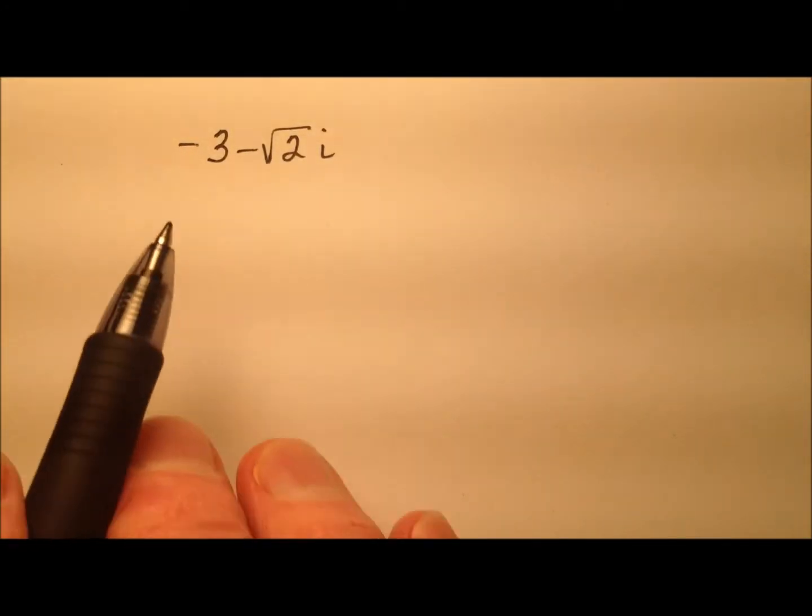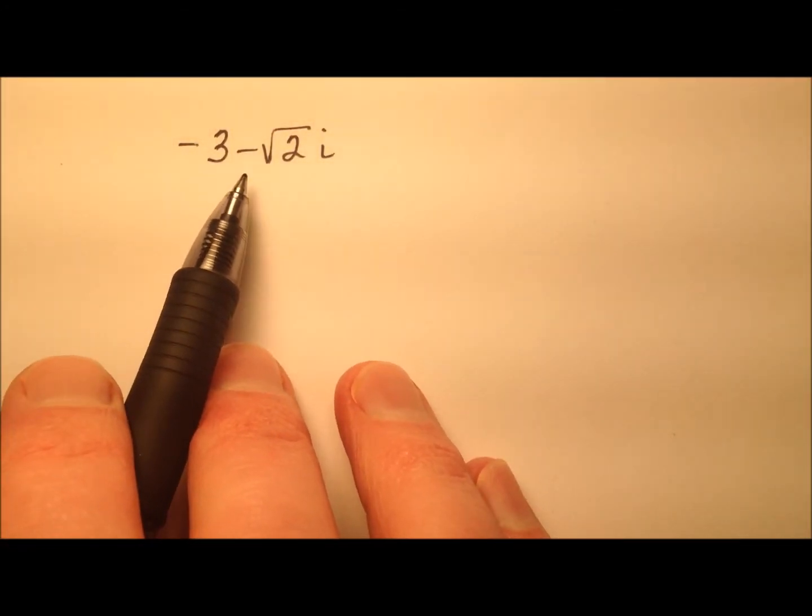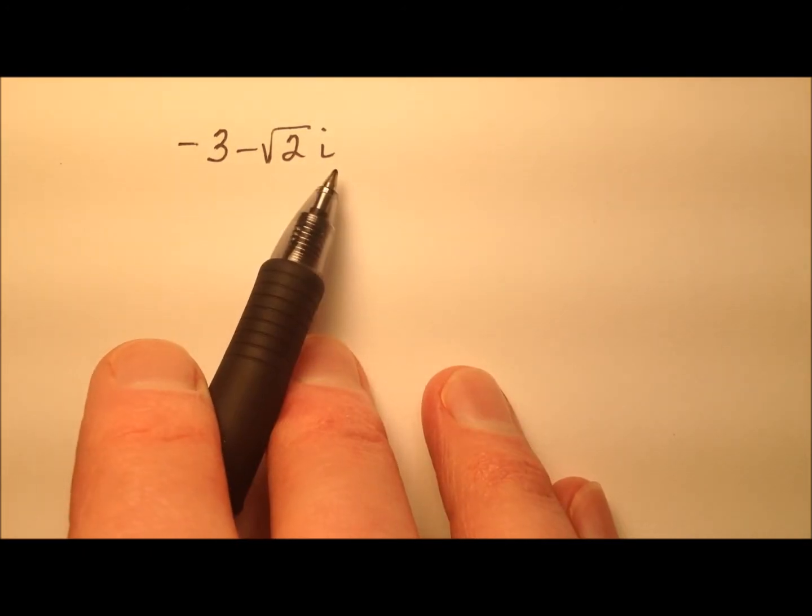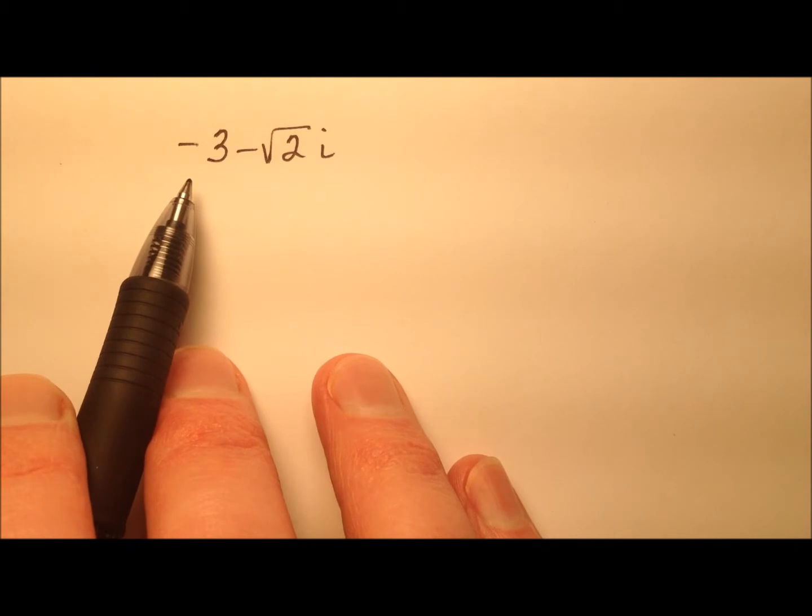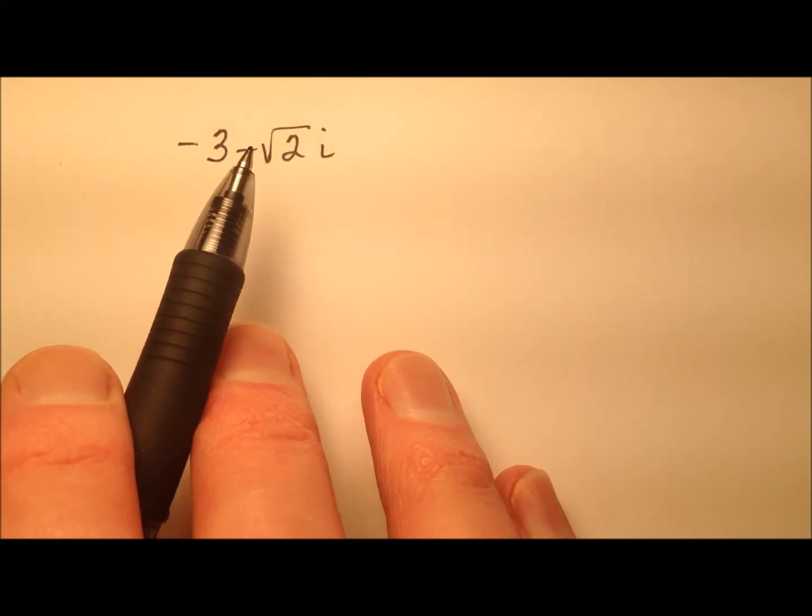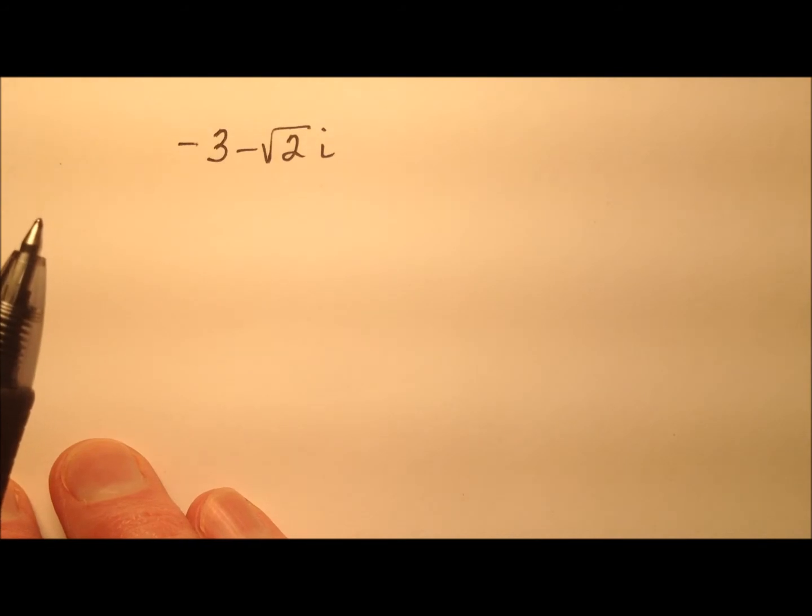In this example, we have the complex number negative 3 minus the square root of 2i. I'd like to do a couple of things here. First, let's find the complex conjugate for this number, and then let's multiply this number by its complex conjugate.